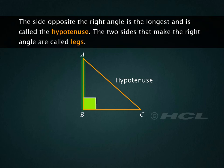The two sides that make the right angle are called legs, so here sides AB and BC are the legs of triangle ABC.